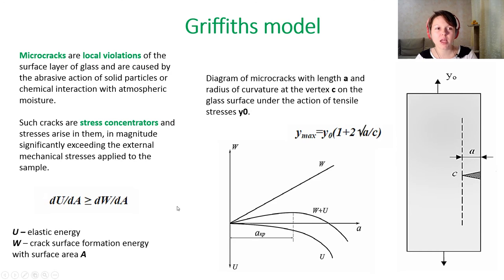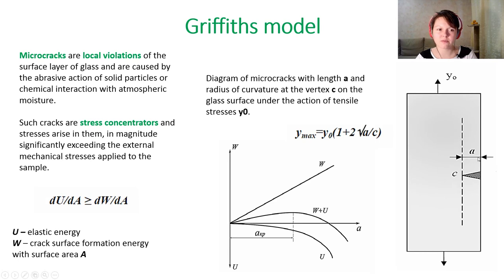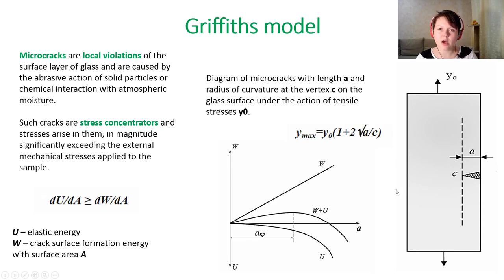Griffith's model states that micro-cracks are local violations of the surface layer of glass, caused by the abrasive action of solid particles or chemical interaction with atmospheric moisture. Such cracks are concentrators of stress, and the stresses arising in them significantly exceed the external mechanical stresses applied to the sample. This means the internal mechanical stresses from micro-cracks are much larger than the externally applied stresses.